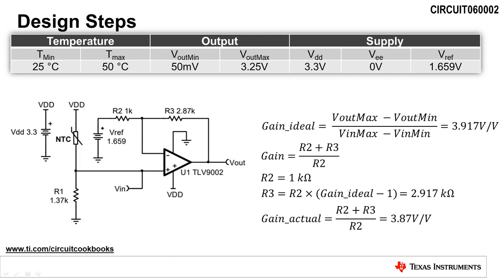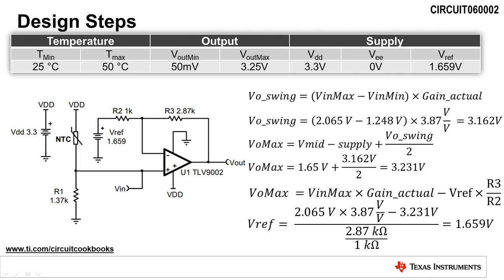Since there are no standard resistors available to give us the ideal gain, we need to calculate the actual gain using the standard resistor values. The actual gain of our circuit is calculated to be 3.87 volts per volt. Next, we calculate the output voltage swing as the maximum input voltage minus the minimum input voltage, multiplied by the actual gain. The output voltage swing is calculated to be 3.162 volts.